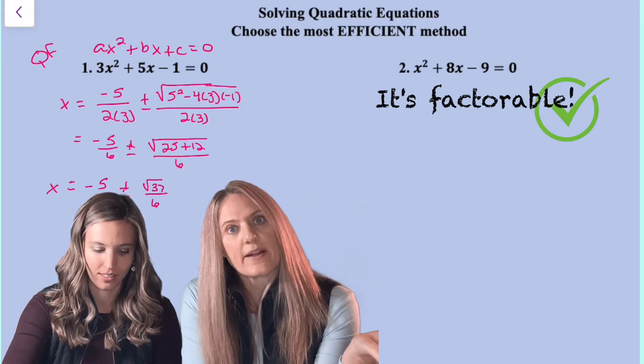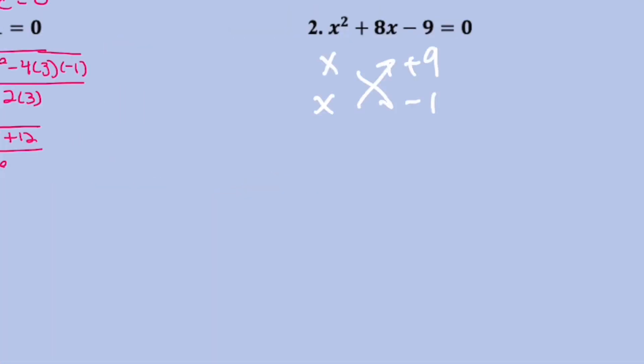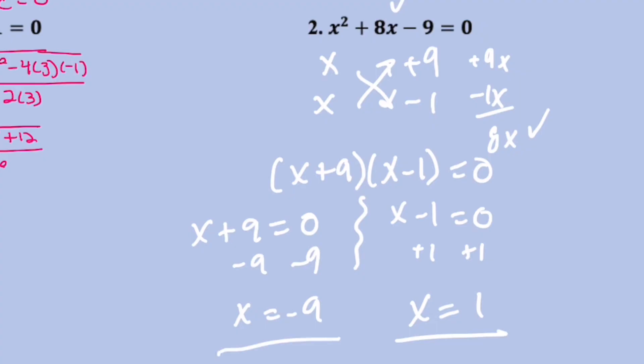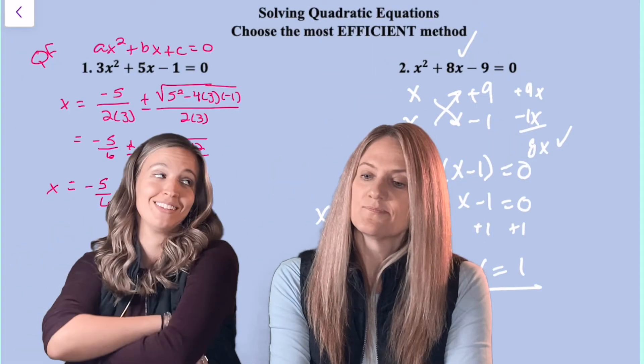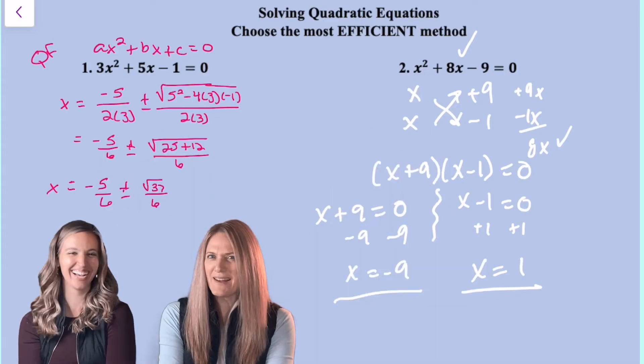Sure, I get quadratic formula. X equals negative nine and x equals one. Whew, I'm way faster than you. Depending on the method.